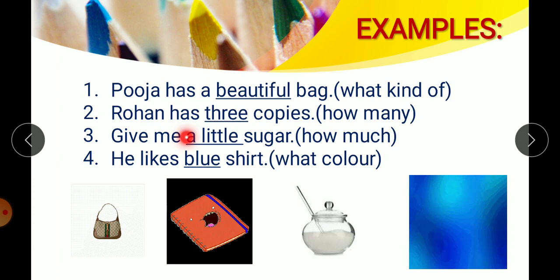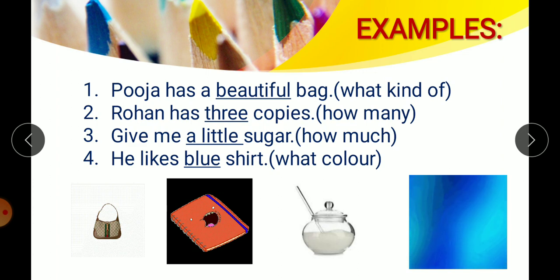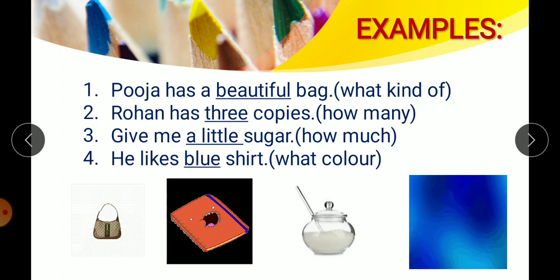Give me a little sugar. Here, 'a little' is an adjective because it is describing sugar — sugar is a noun — by telling us the quantity of sugar, that is how much. He likes a blue shirt. Here, the word 'blue' is an adjective because it is telling us about the color of the shirt.